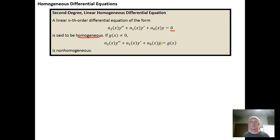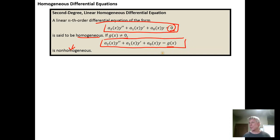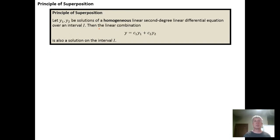If the equation is equal to some g of x, where g of x isn't zero, then we say it's non-homogeneous. So here I have a second order linear homogeneous differential equation (equal to zero), and over here I have a second order linear non-homogeneous differential equation. The principle of superposition for linear second degree